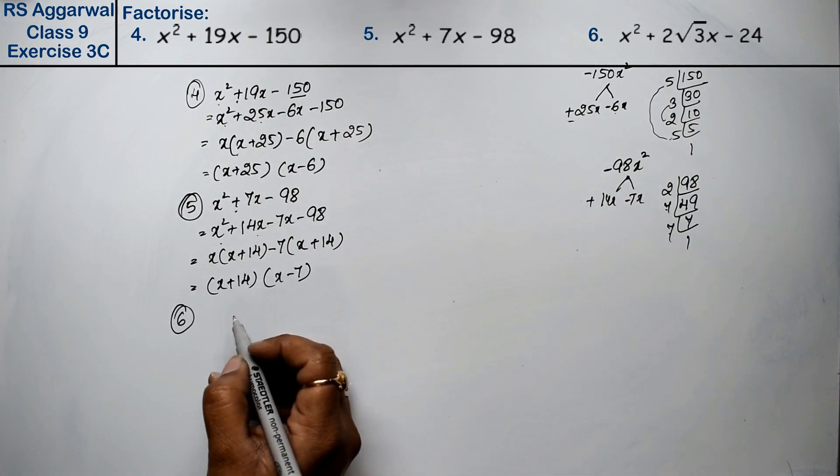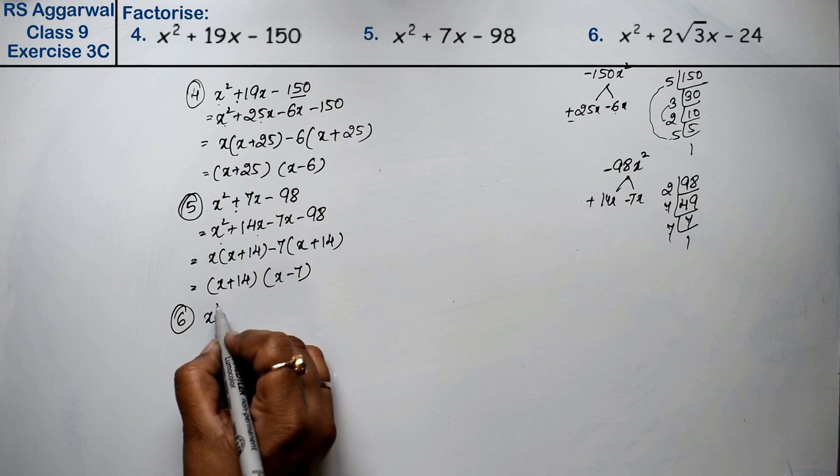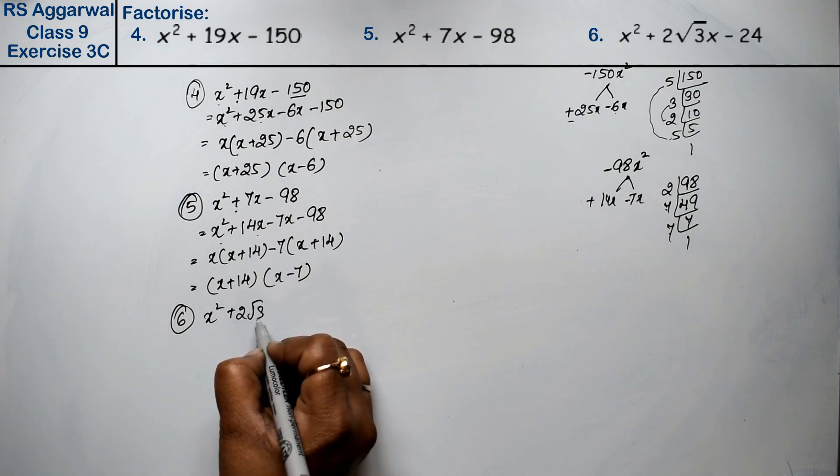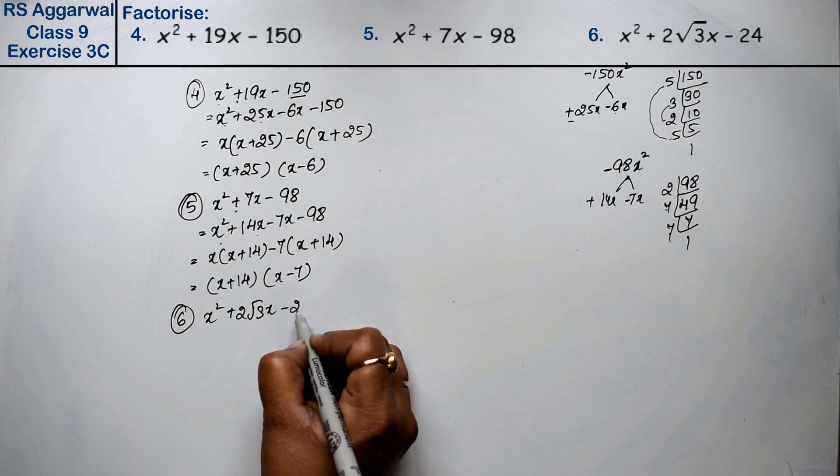Let's do question number 6. Question number 6 is x square plus 2 root 3 x minus 24.